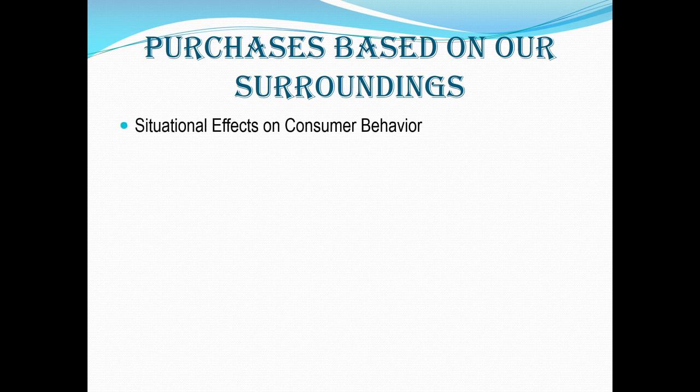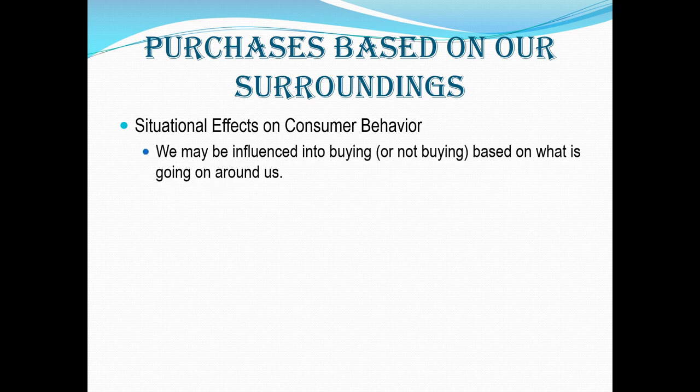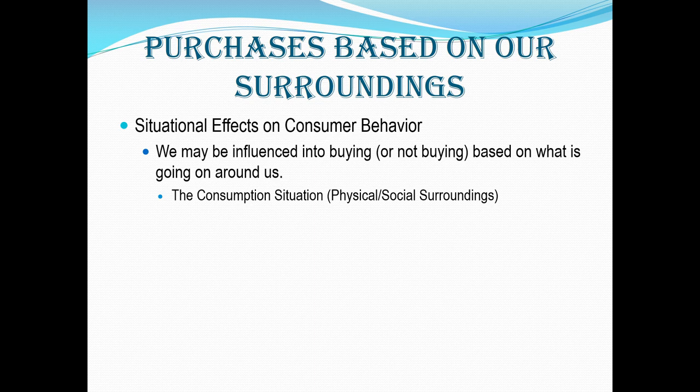For the most part, from this chapter on buying and disposing, what we're talking about is how we as consumers can really be influenced into buying or not buying based a lot on what is going on around us. These are what we call situational effects — what is happening around us that can influence us into buying something or not buying something. Let me summarize them to start, and then we'll go through them detail by detail. The first thing we talk about is what is called the consumption situation.